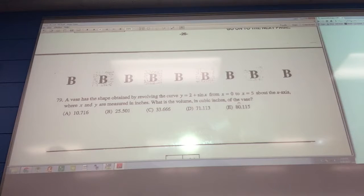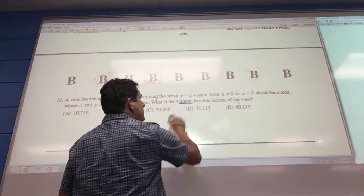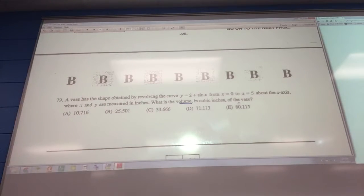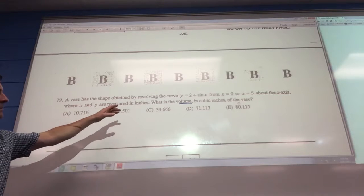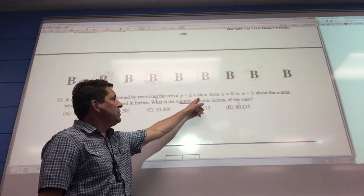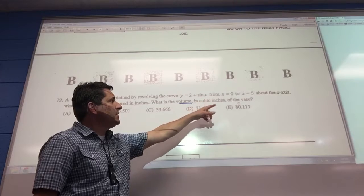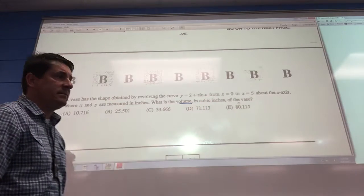Okay, number 79. What is the volume? Okay, so it's a rotation one. So we're going to revolve y equals 2 plus sine of x from x equals 0 to 5 about the x-axis.